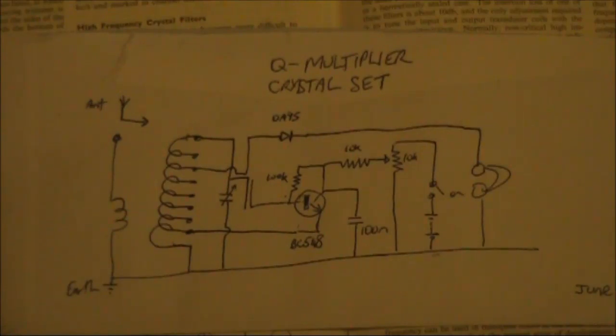A 100k between base and collector. 10k between collector and the wiper of a potentiometer. That potentiometer can be between about 10 and 100k. Its value isn't really critical. Connecting to the free end of the potentiometer is the plus terminal of a 9V battery, the other end to ground.